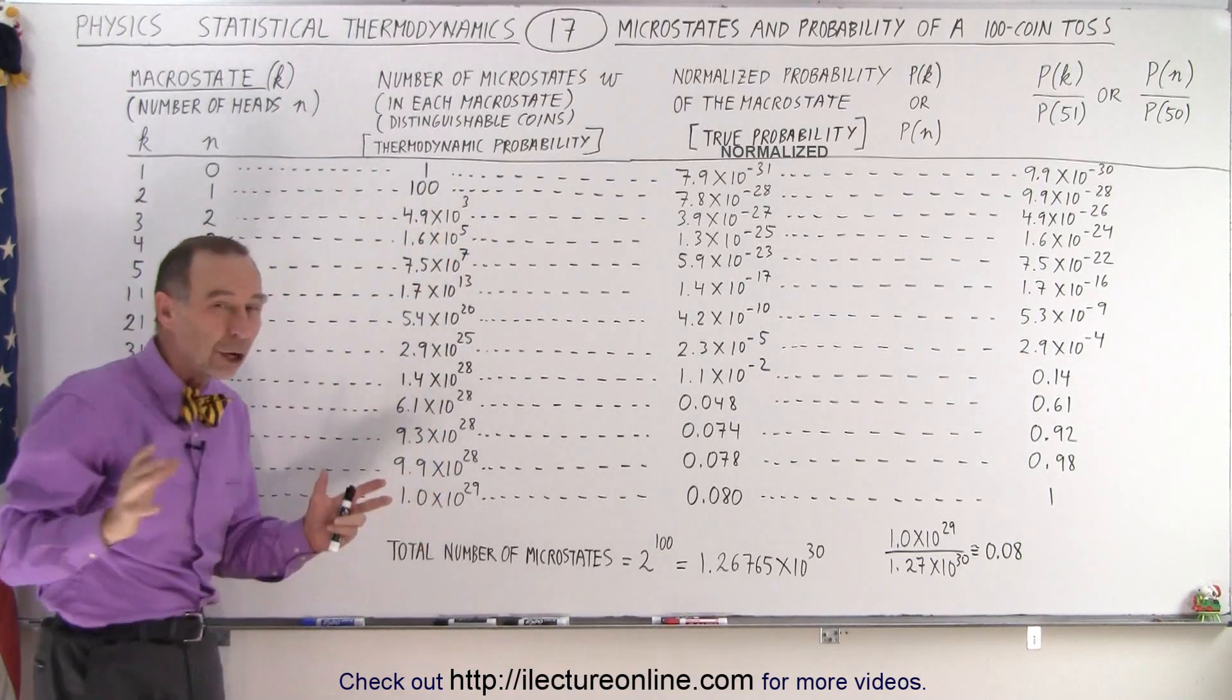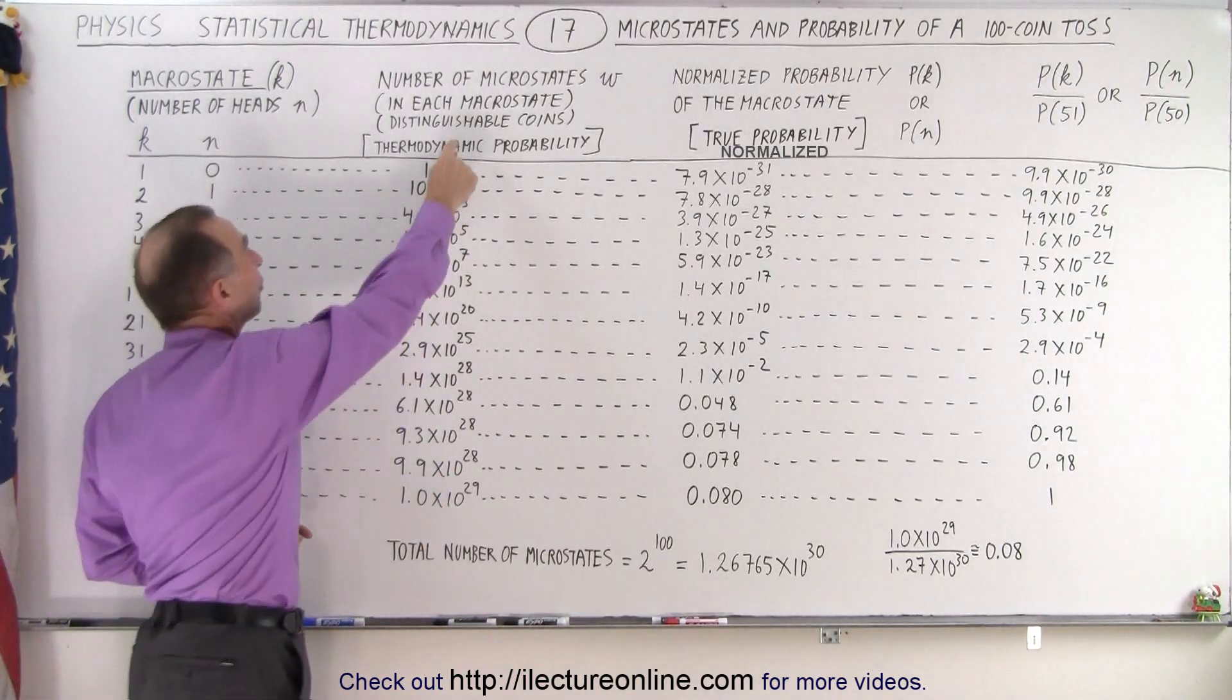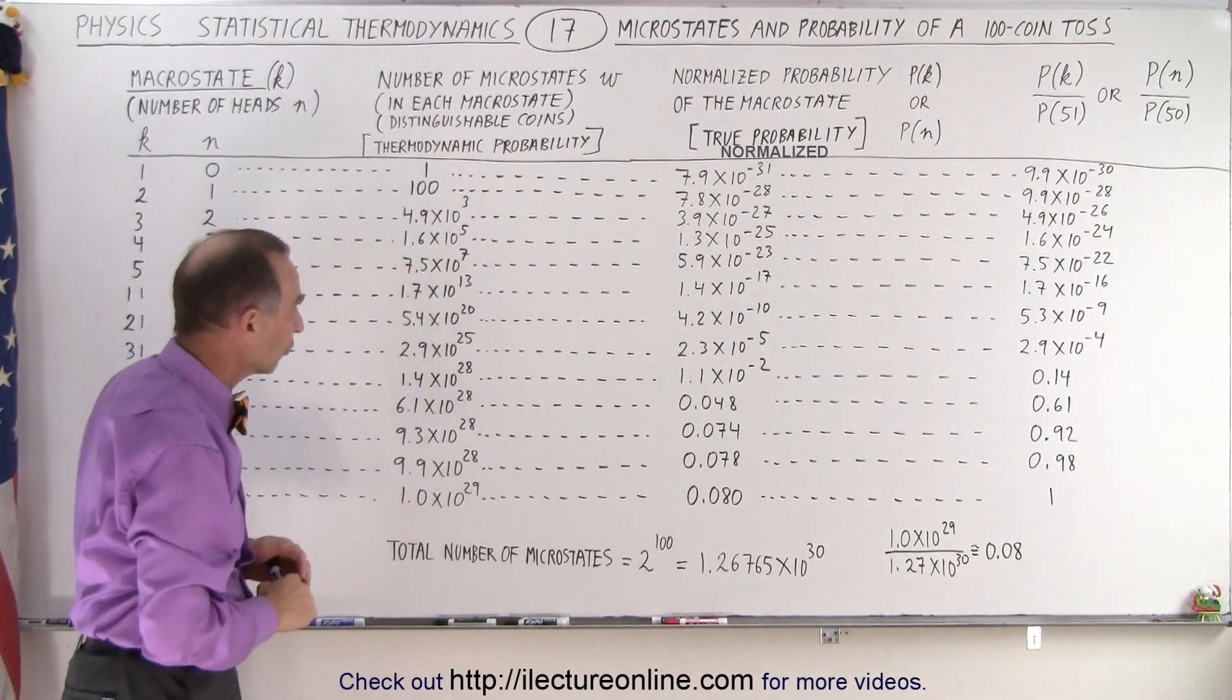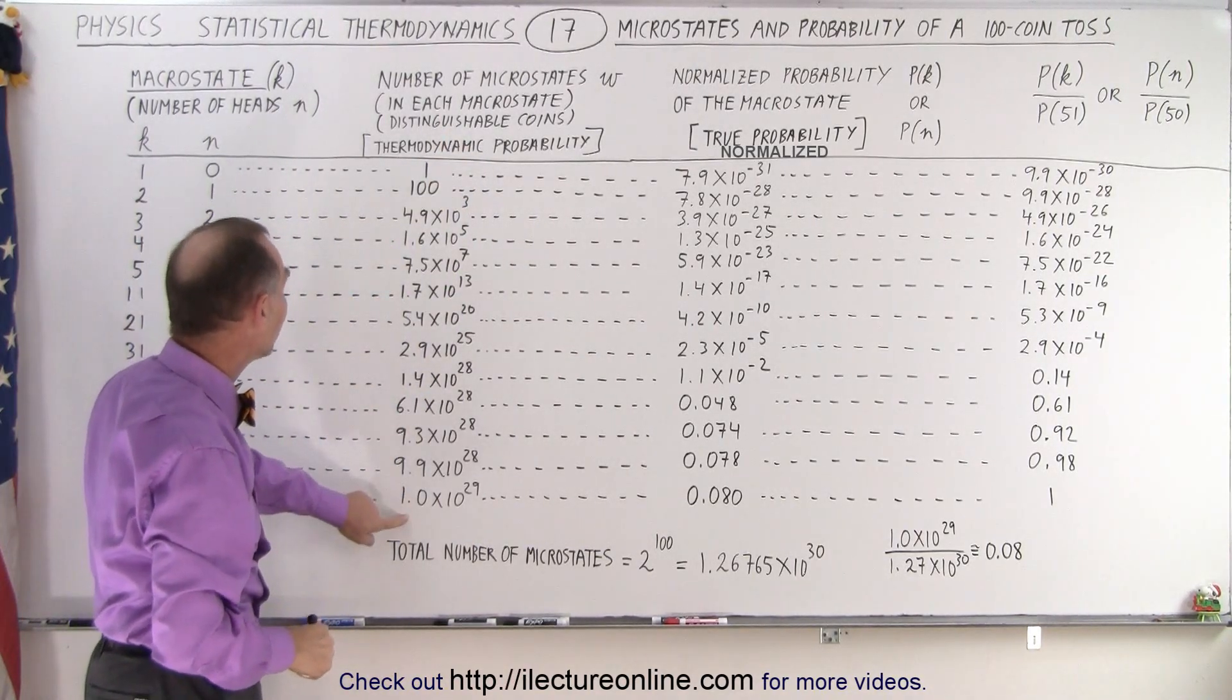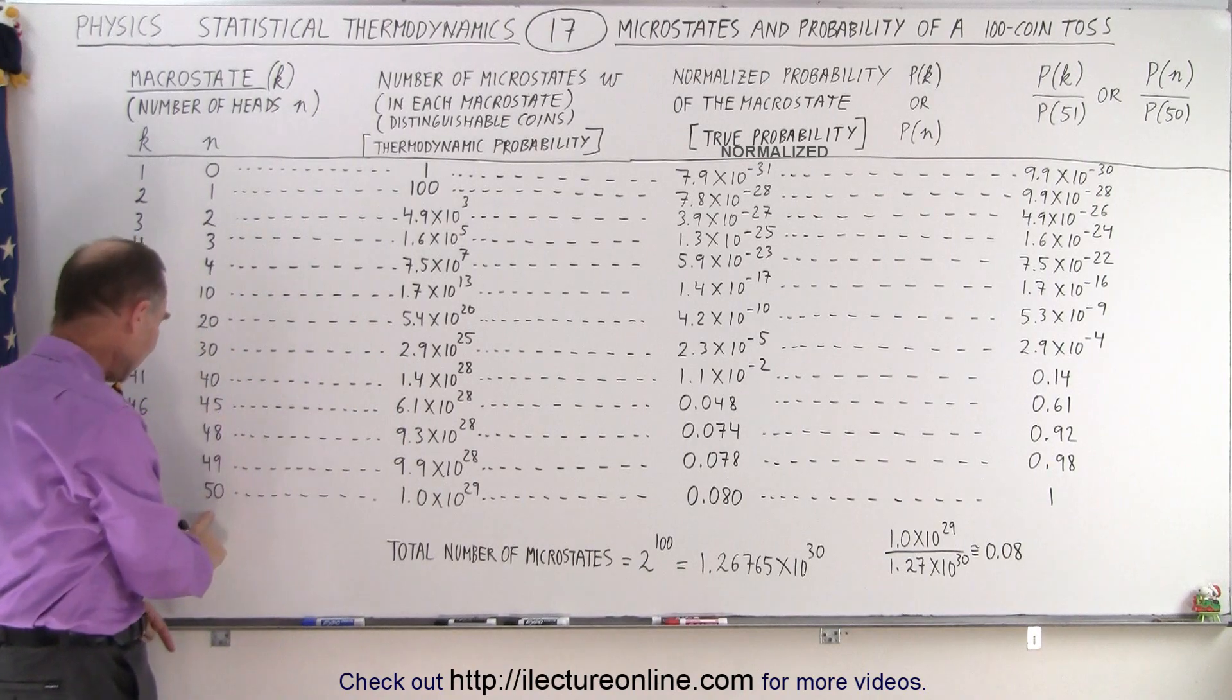again, if we're working with distinguishable coins. You can see that by the time we get to 50 heads, which is the 51st macrostate,